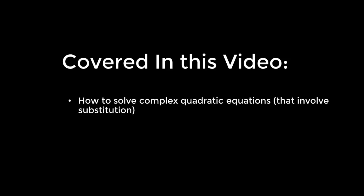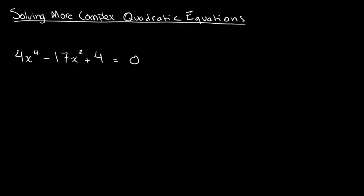In this video, I will be teaching you how to solve more complex quadratic equations. Over here we have an equation that says 4x to the fourth power minus 17x squared plus 4 is equal to 0. At this point you're probably wondering how on earth are we going to solve this — we've never solved any equations to the power of 4, and this clearly isn't a quadratic equation.